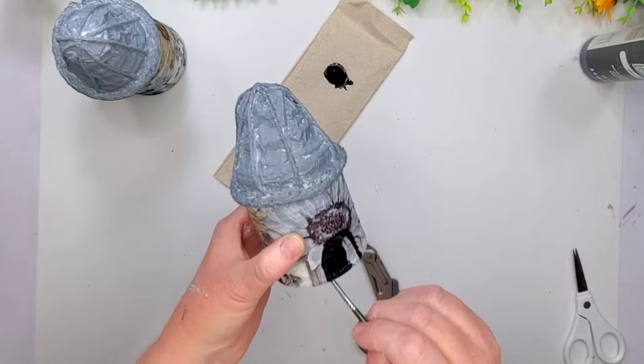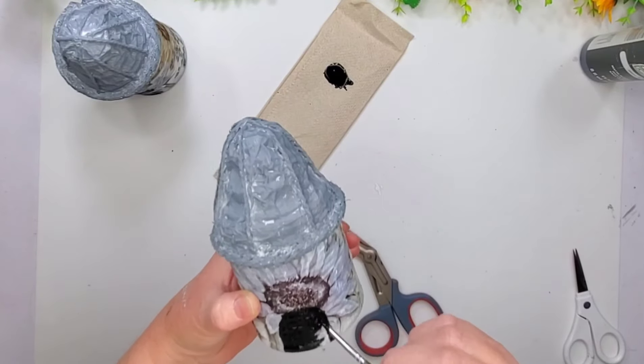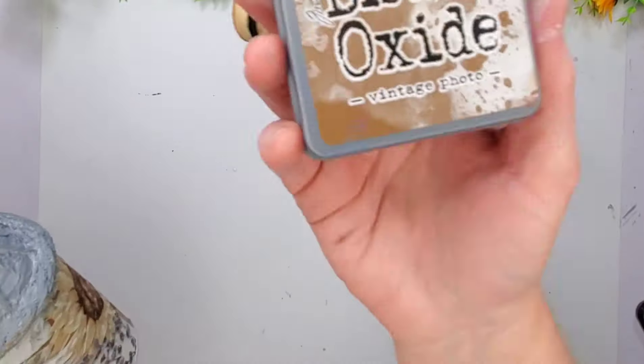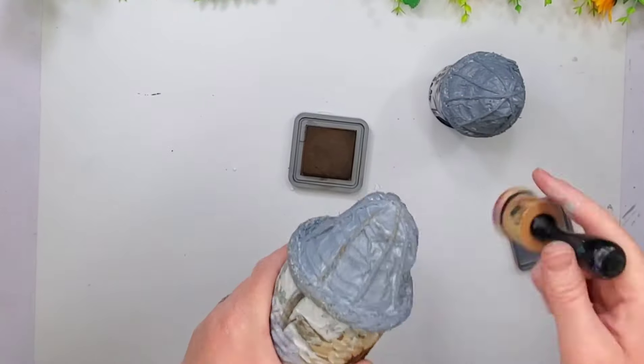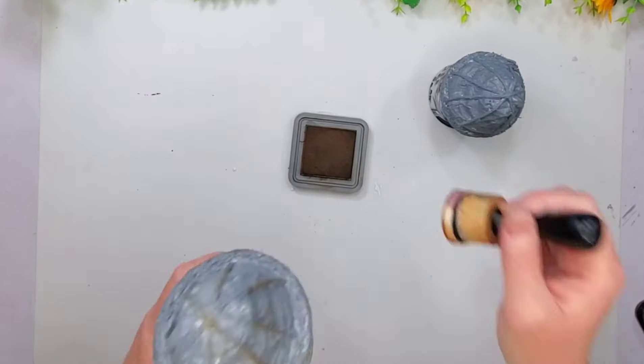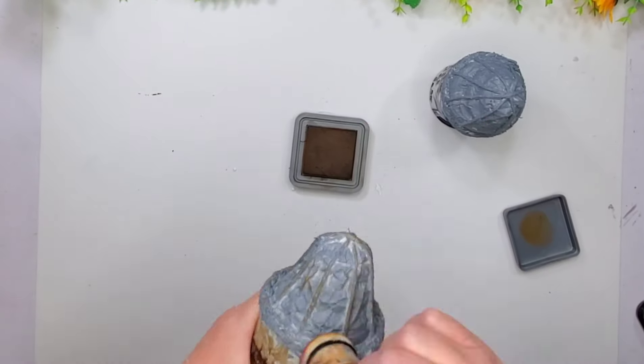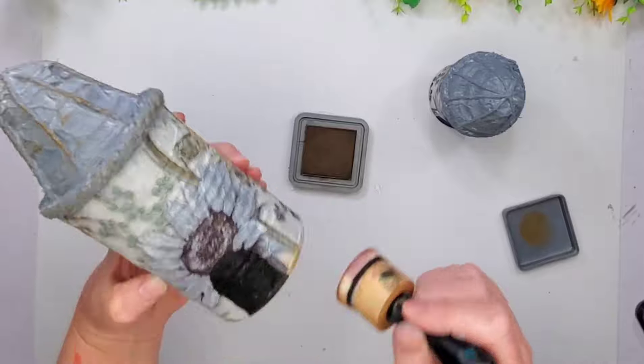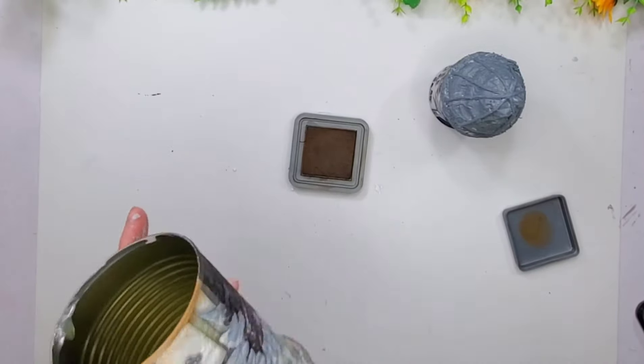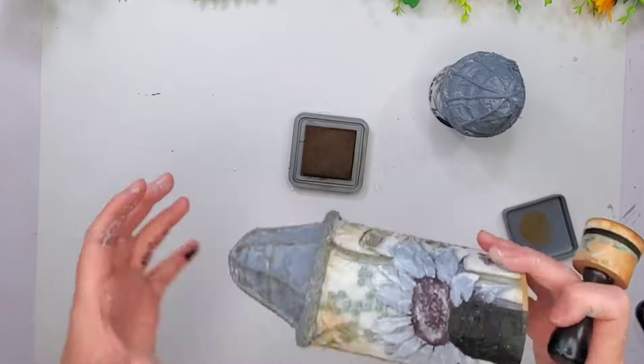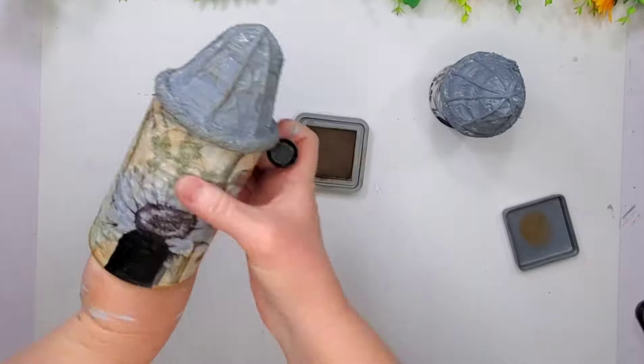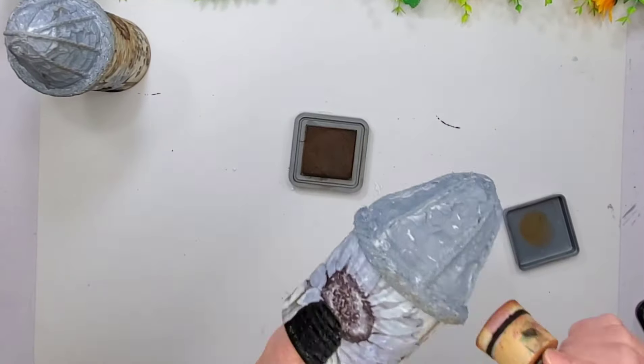And then I did a mod podge over top of the entire thing as well, just to make sure everything was going to stay down. Now I decided I was going to draw on a couple doors here. This one had some writing on the front of it. So I decided to cover that part up because there wasn't really any writing on the rest of it.